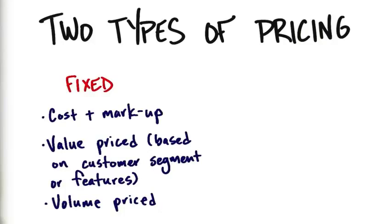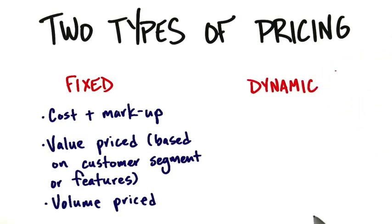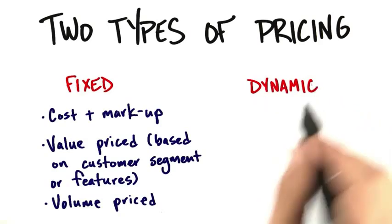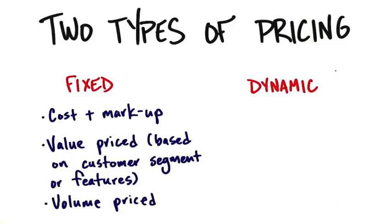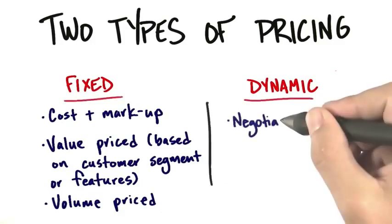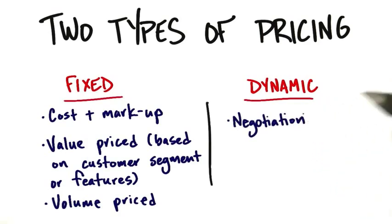So cost plus markup, value pricing, and volume pricing are all examples of fixed pricing tactics. But there's another type of pricing: dynamic pricing. Dynamic pricing is exactly what it sounds like — dynamic means it moves. Pricing that you negotiate, where you have a price on paper but that's just the starting point of a conversation — that's a negotiated price, which is a dynamic price.